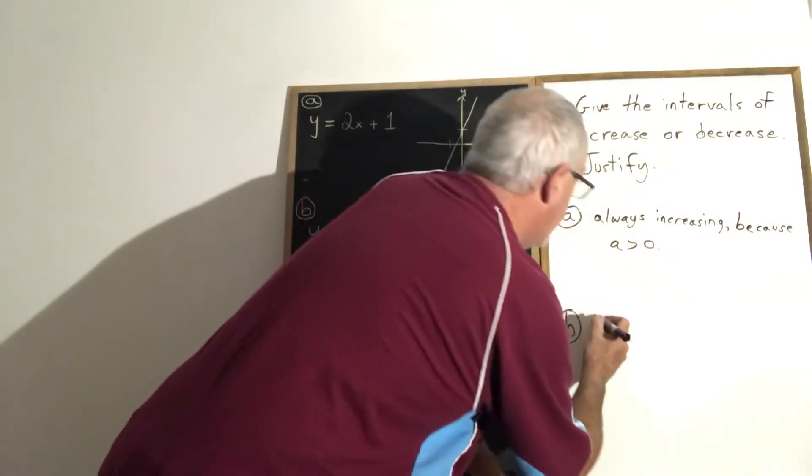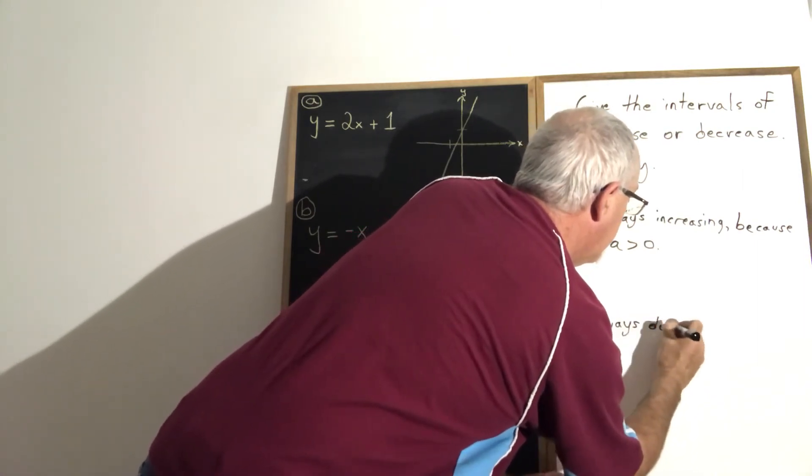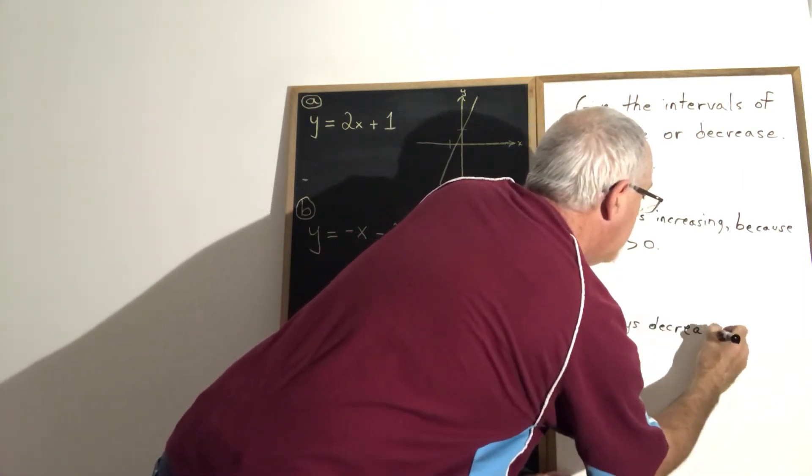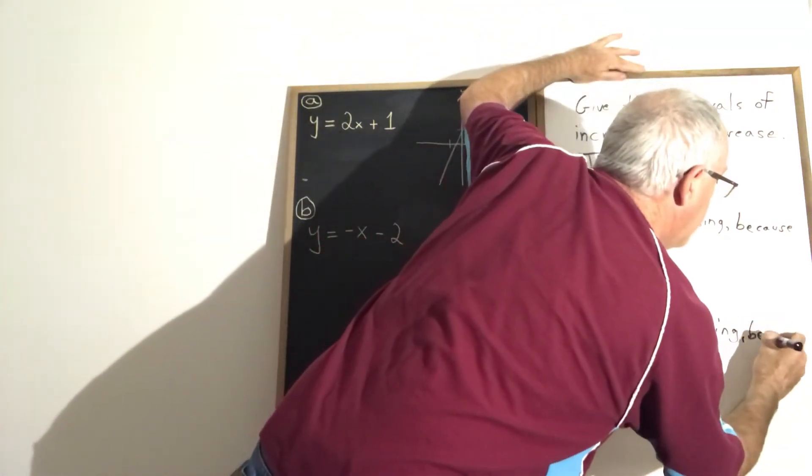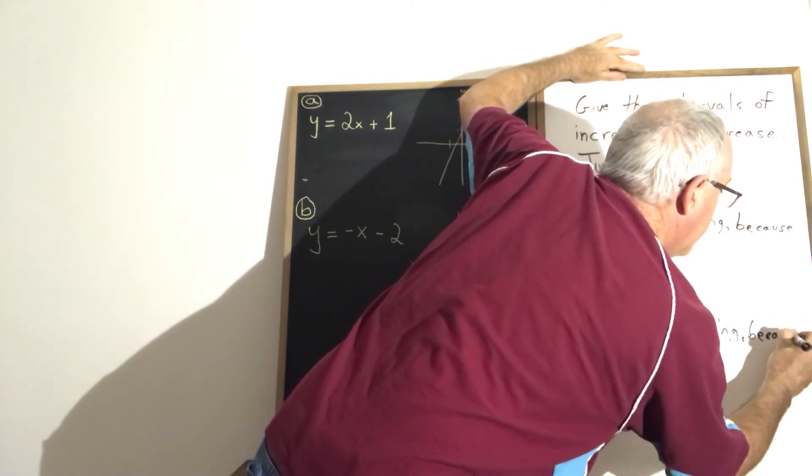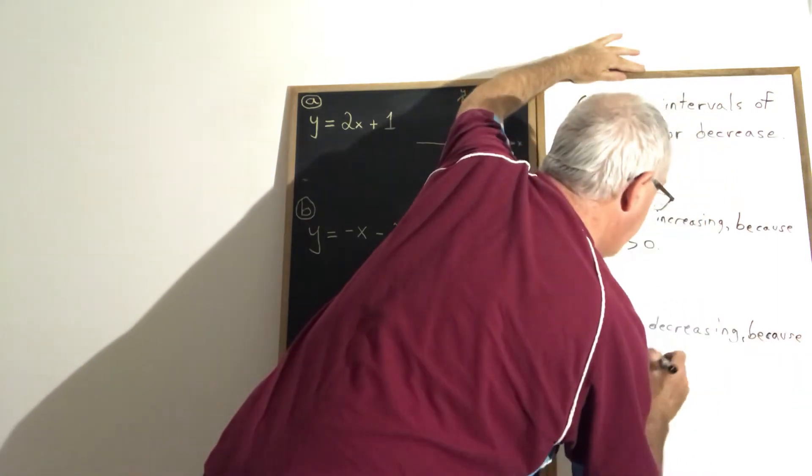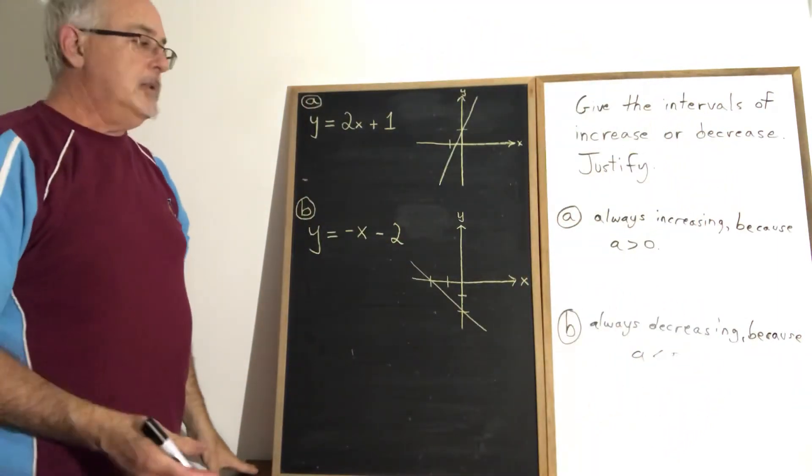So the answer for B, always decreasing. And the justification is because A is less than zero. Or I can write because A is negative.